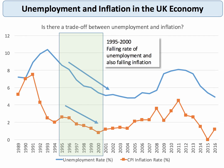Another period of interest is from 1995 through to 2000. In this period, the rate of unemployment was falling, albeit from a high level, and so too was inflation — falling from 2% to below. So it's possible to have falling unemployment and falling inflation, again something the standard short-run Phillips curve doesn't suggest.